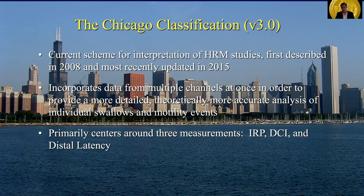There are three primary metrics that are used to develop ultimately the diagnosis that we make as a result of what we're doing with the Chicago Classification. And those are the integrated relaxation pressure — IRP — distal contractile integral — or DCI — and the distal latency.